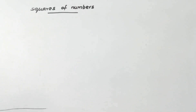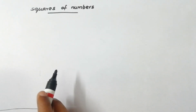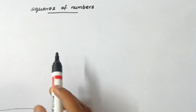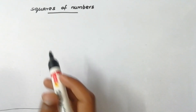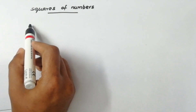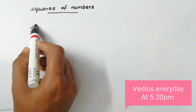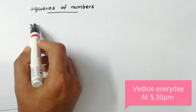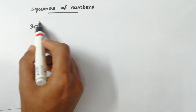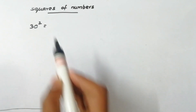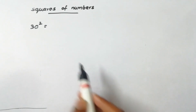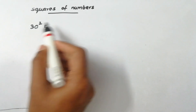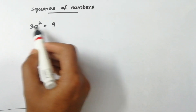I am going to learn how to do square and square root. Now, let's talk about squares of numbers. Let's talk about 30. 30 is a square. You can do it. 3 is a square — 9.